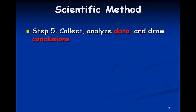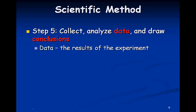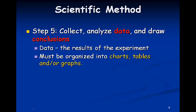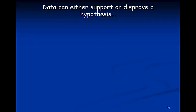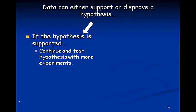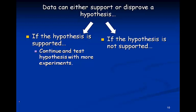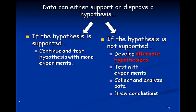Our next step after we've done our experiment is to collect and analyze our data and draw conclusions. Our data is going to be the results of our experiment. And if we just have a whole bunch of raw numbers, it doesn't help us very much. So, we would organize it into tables, charts, and graphs. When we have our data, data can either support or disprove a hypothesis. If our data supports our hypothesis, then we are going to continue to test our hypothesis with more experiments. If our hypothesis is not supported, we develop alternate hypotheses, test that with experiments, collect the data, and draw conclusions there.